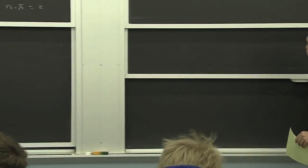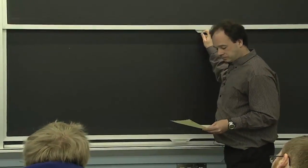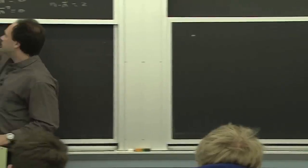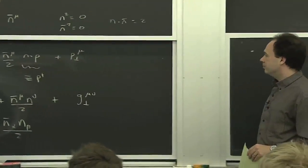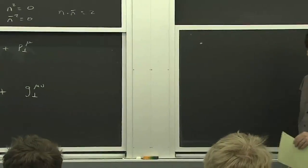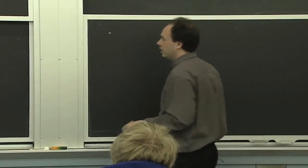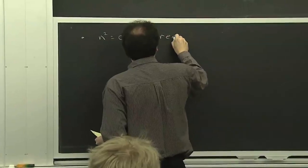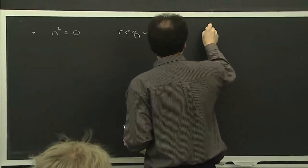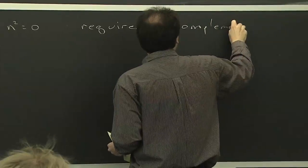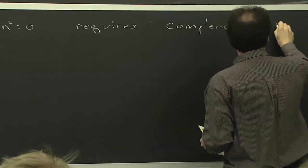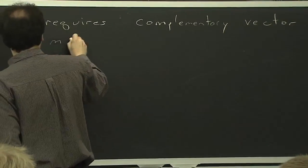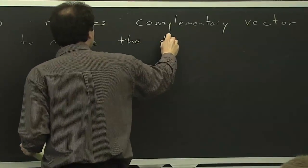So these are the coordinates we're going to use. Here n had a physical motivation, as you saw from the picture — the pion was moving in the n direction. n-bar was just a vector that we decided we needed in order to define things. If you have some vector where n squared is 0 and you want to make a decomposition of coordinates, you're required to introduce a complementary vector, which is this n-bar.